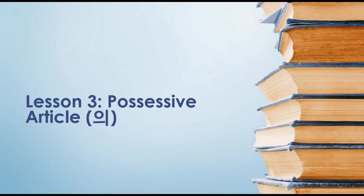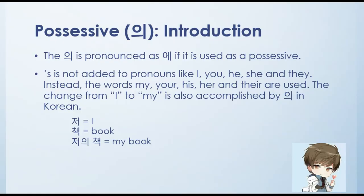Let's move to Lesson 3: the possessive particle. This character, 의, is pronounced as e when used as a possessive. Apostrophe S is not added to pronouns like I, you, he, she, or they — instead, the words my, your, his, her, and their are used. In Korean, turning I into my is accomplished by adding e after the pronoun. For example: cho equals I, and check is book. So cho-e check means 'my book.' You just add e after cho to make it possessive. So: cho-e, check.